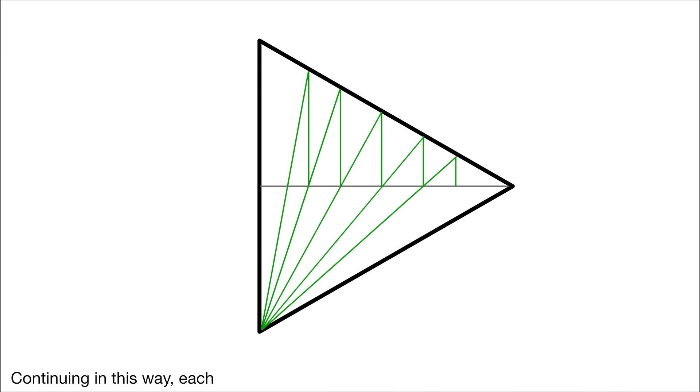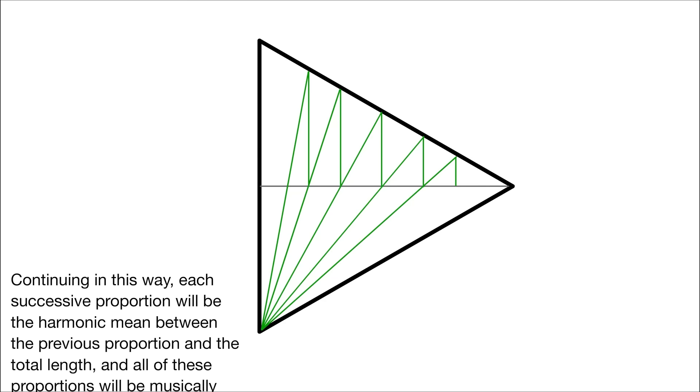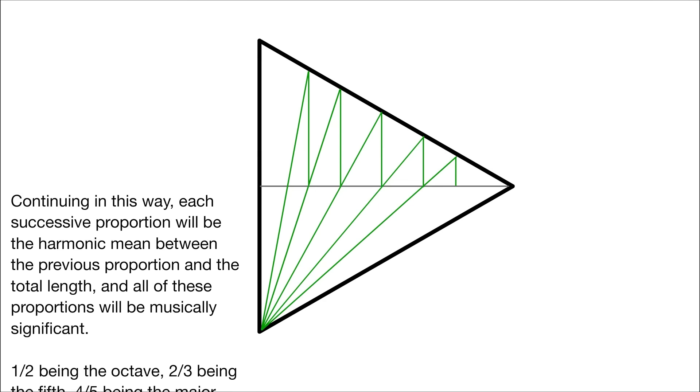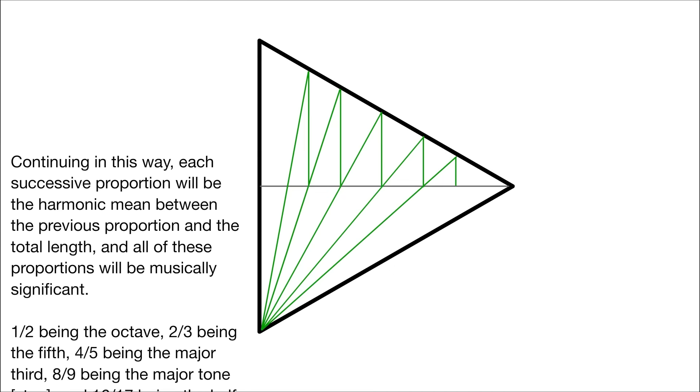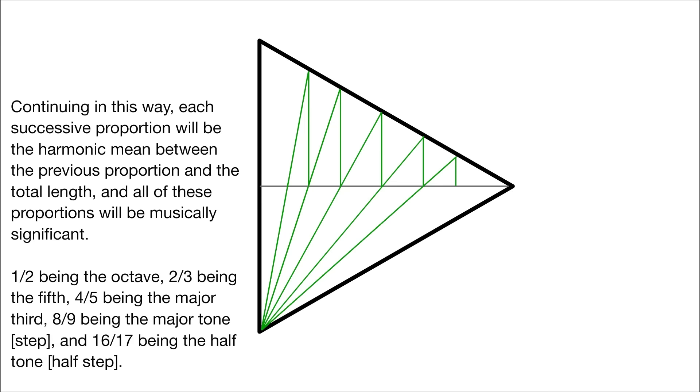He writes, continuing in this way, each successive proportion will be the harmonic mean between the previous proportion and the total length, and all of these proportions will be musically significant. 1 over 2 being the octave, 2 over 3 being the fifth, 4 over 5 being the major third, 8 over 9 being the major tone or step, and 16 over 17 being the half tone or step. In other words, he discovered the geometries of music, or at least one aspect of them.